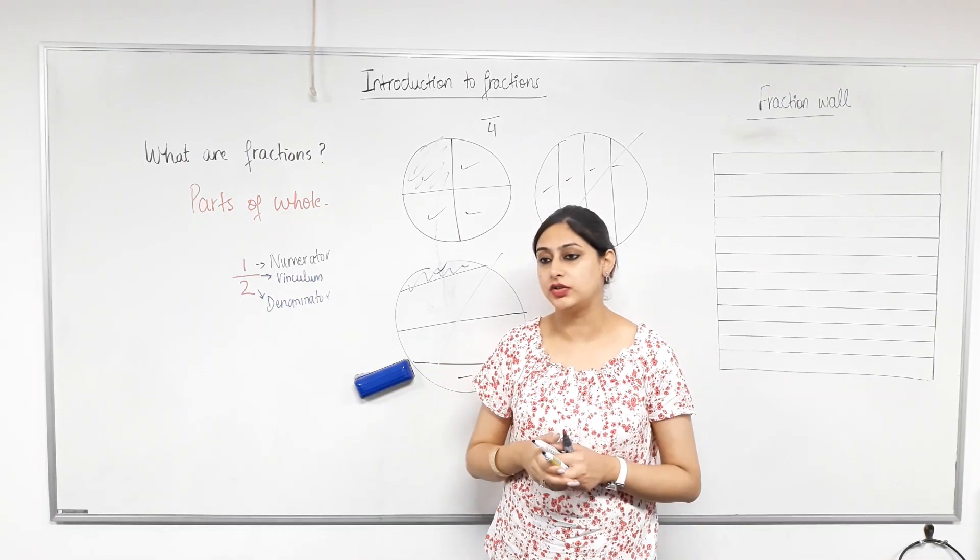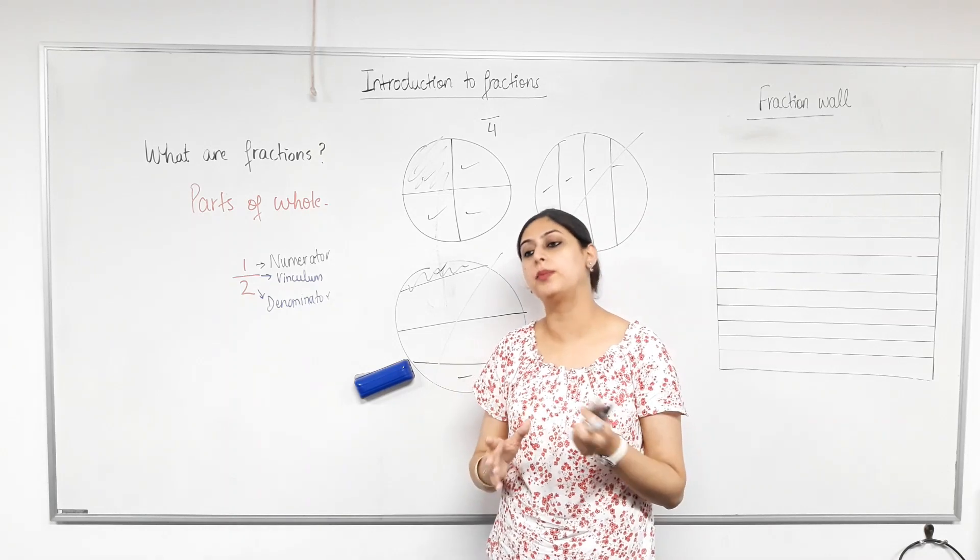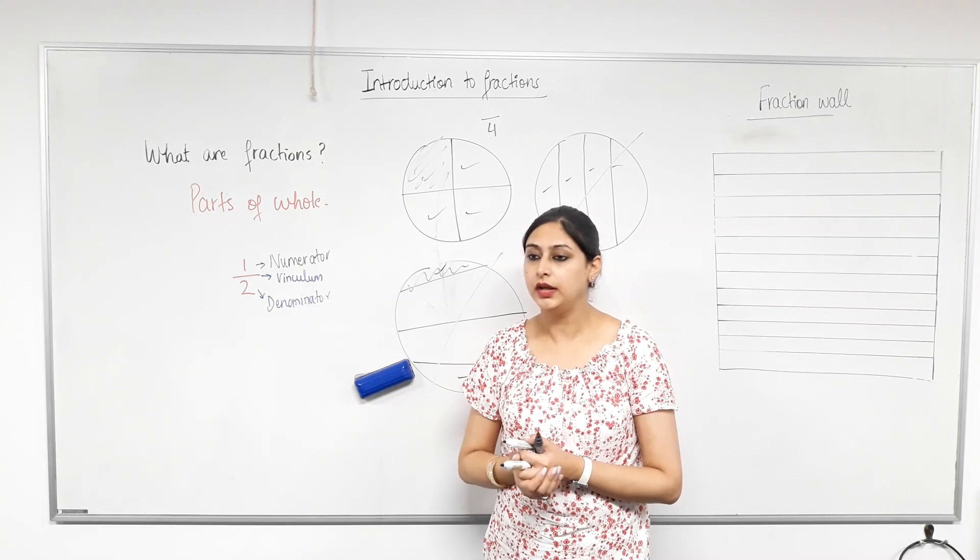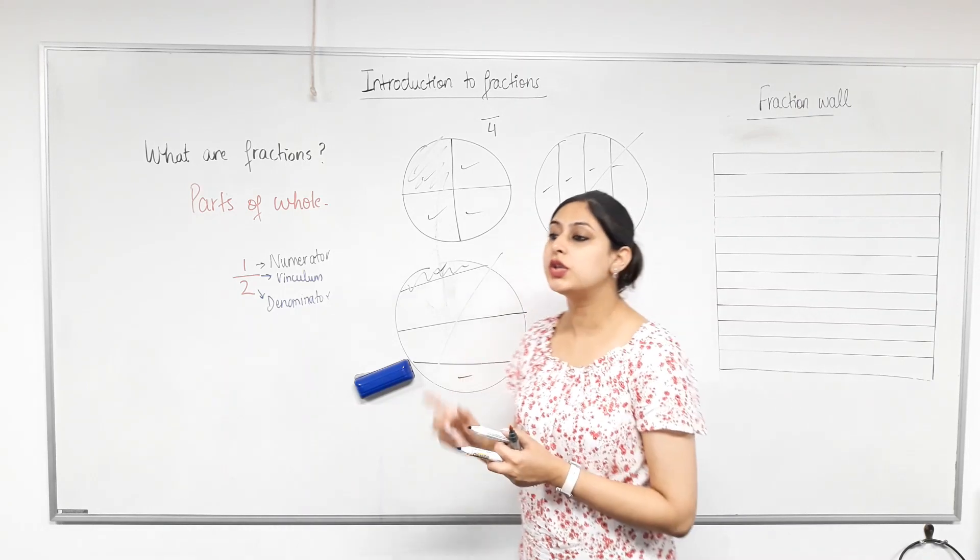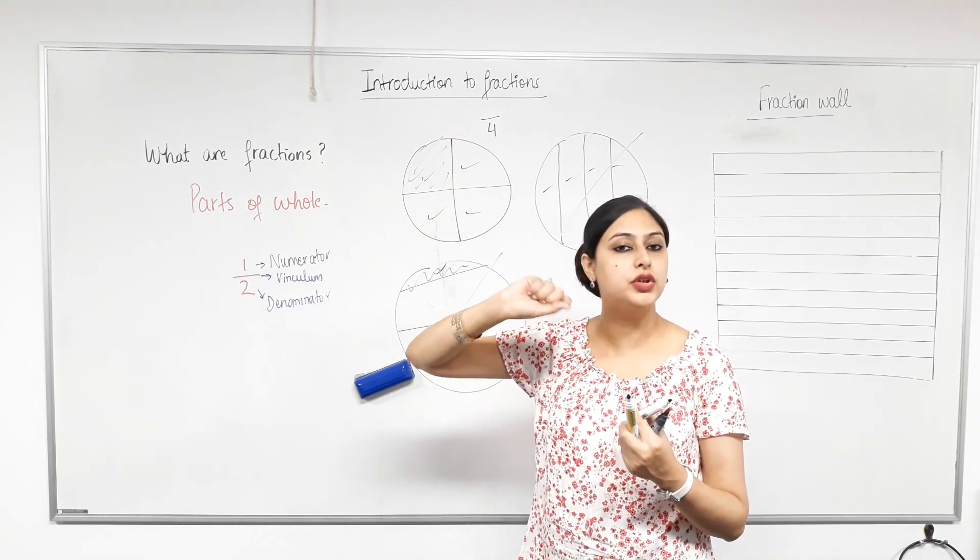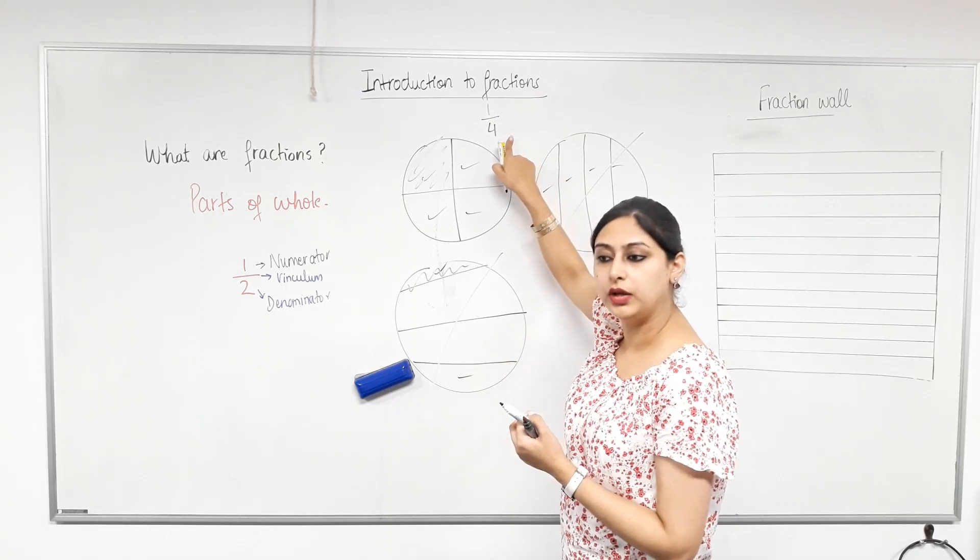Then we can't write it as a fraction. Then we can't say it's that. They have to be equal for us to represent it as a fraction. Otherwise, we'll have to figure another way. Okay? Now, so if one student ate one out of those parts, what fraction of a pizza that student ate? One out of four parts.